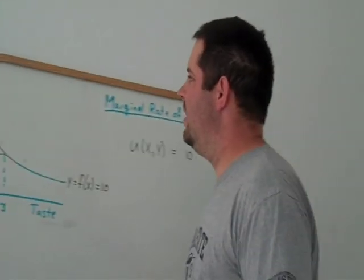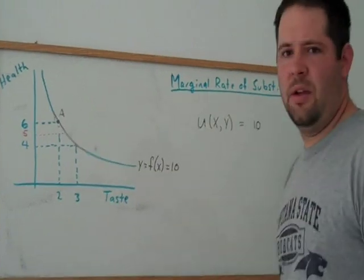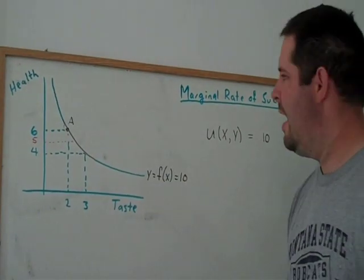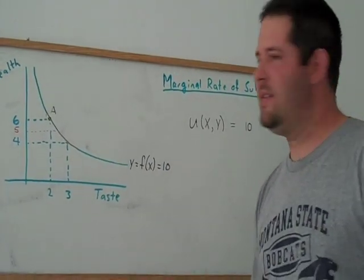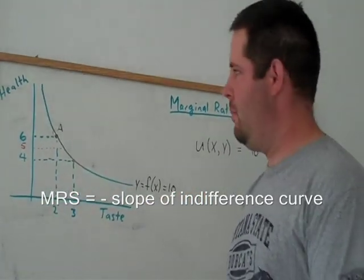So if we take a look at this indifference curve, we want to think about the marginal rate of substitution as being the negative of the slope of this indifference curve. So it would be a positive number.